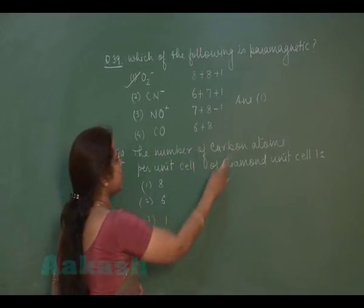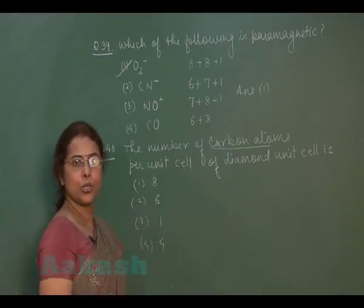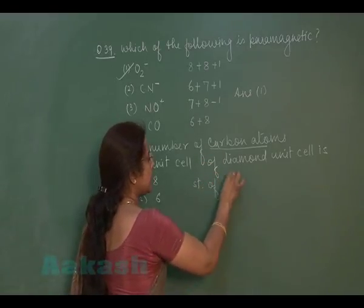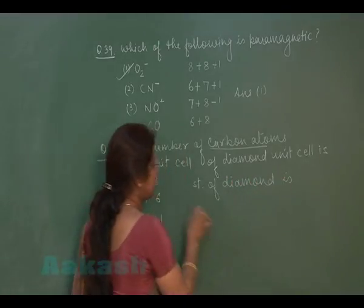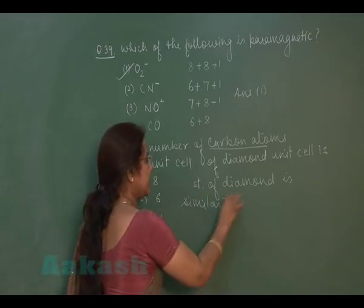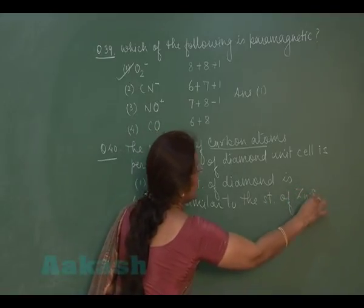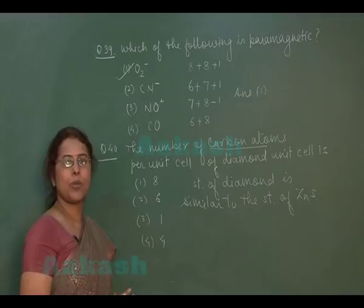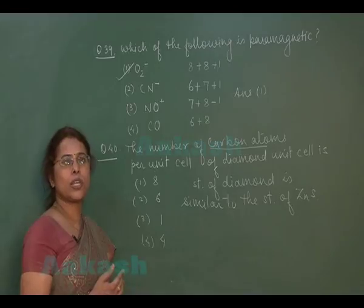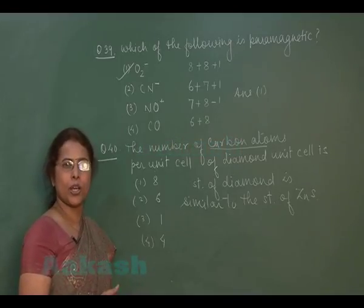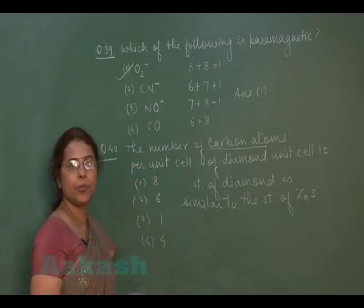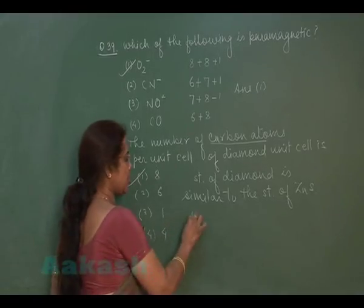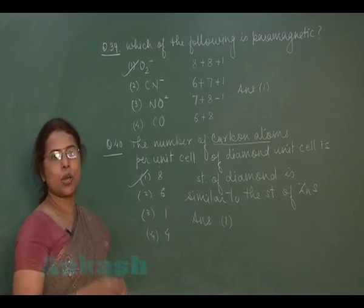Question 40: The number of carbon atoms per unit cell of diamond. The structure of diamond is similar to that of zinc sulfide (ZnS). In the ZnS structure, sulfide ions form a ccp lattice with 4 sulfide ions per unit cell, and 4 zinc ions occupy alternate tetrahedral voids. If all ions of zinc sulfide are replaced by carbon atoms, the structure becomes that of diamond. Therefore, there are 8 carbon atoms per unit cell, and the answer is option 1.